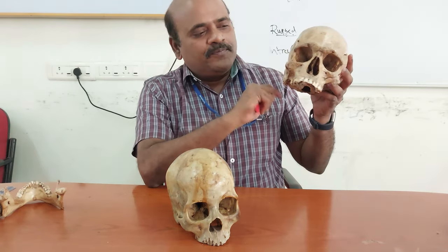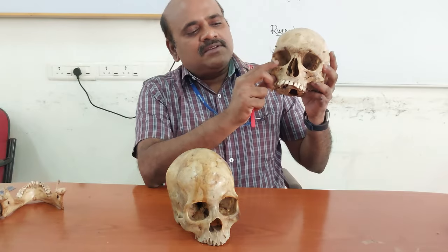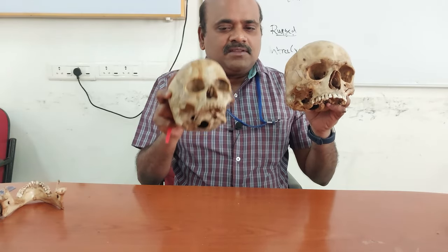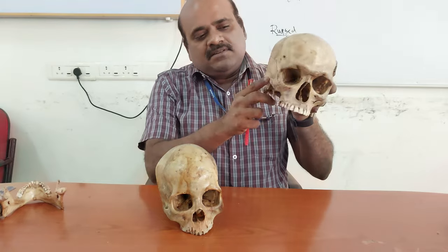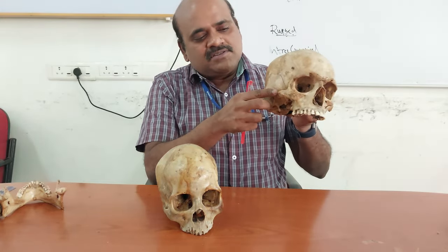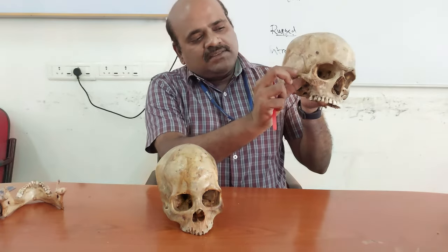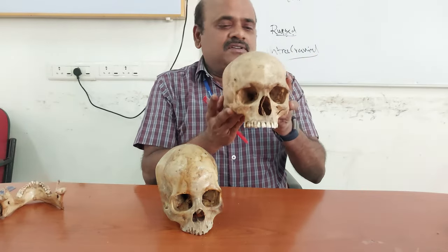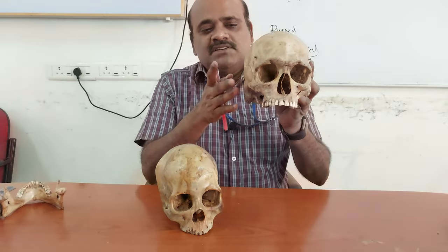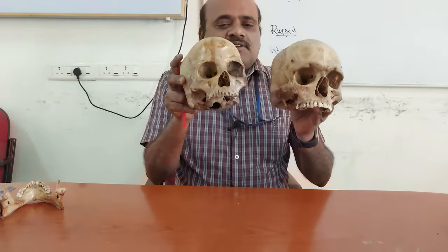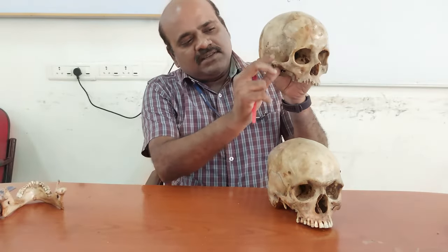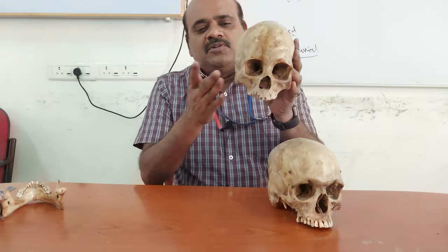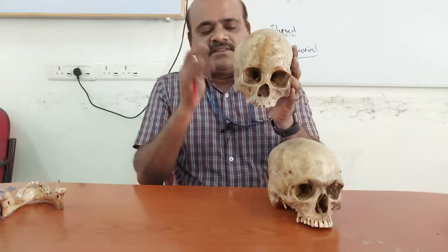The zygomatic bone and zygomatic process together form the cheekbone. In the male, the zygomatic bone is broader, larger and thicker, whereas in the female it is relatively smaller, thinner and lighter. The zygomatic arch in the male is broader, thicker, larger in size and the lateral arching is more pronounced — the outward bulging is greater in the male skull. In the female skull, the zygomatic process is relatively smaller and thinner, and the lateral arching is lesser; it is more compressed in the female skull.